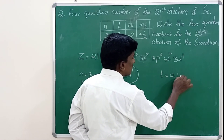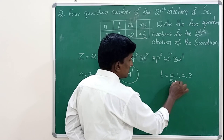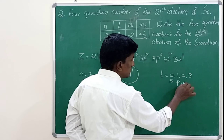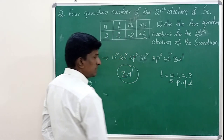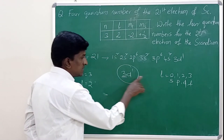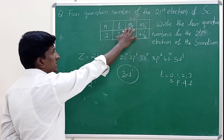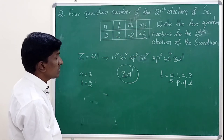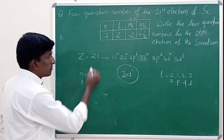The angular momentum quantum number l takes values 0, 1, 2, 3. If l = 0, it is the s orbital; if l = 1, it is the p orbital; if l = 2, it is the d orbital; if l = 3, it is the f orbital. So here the d orbital is present, meaning the l value is 2. Then the magnetic quantum number is minus 2.